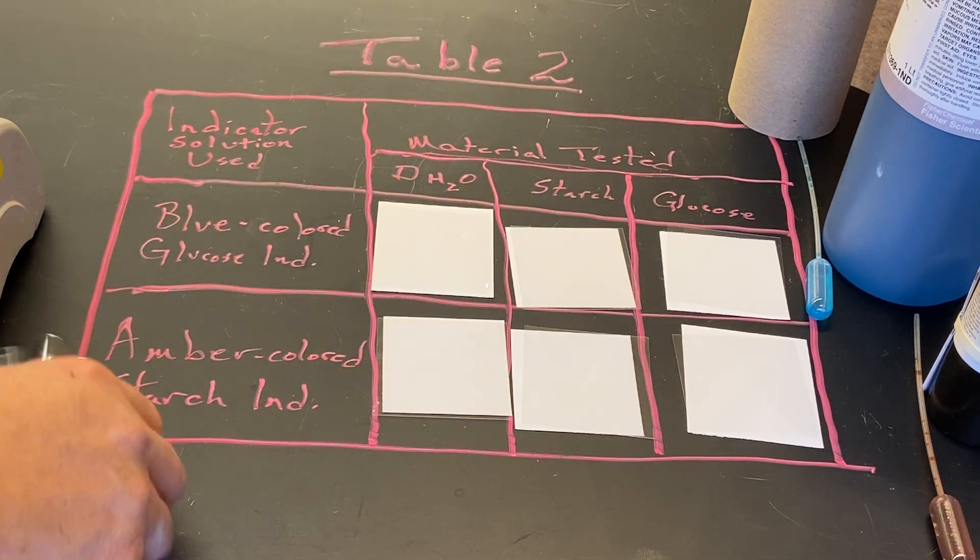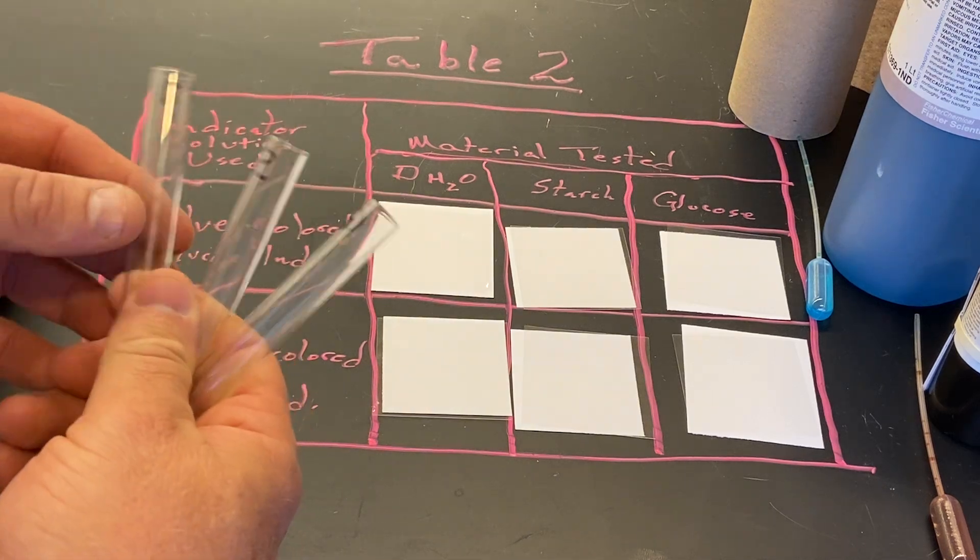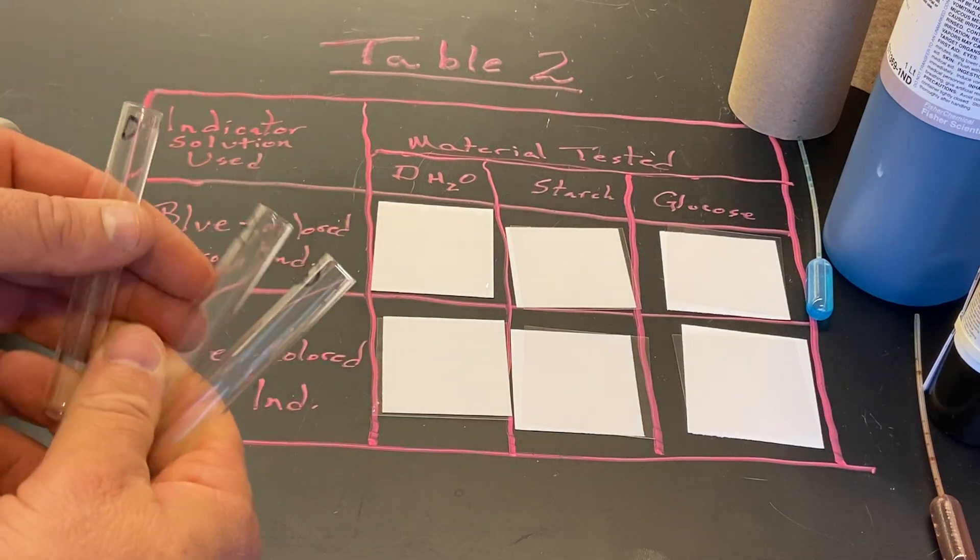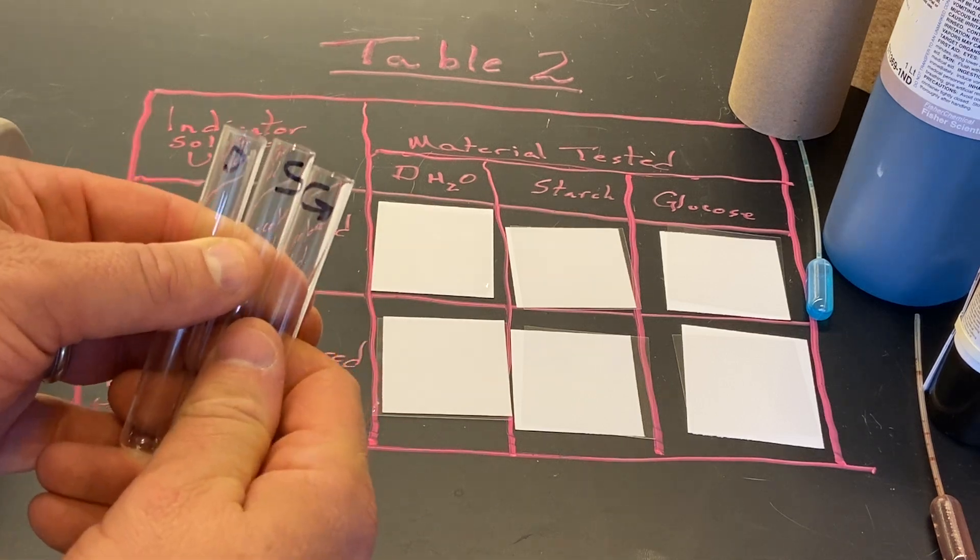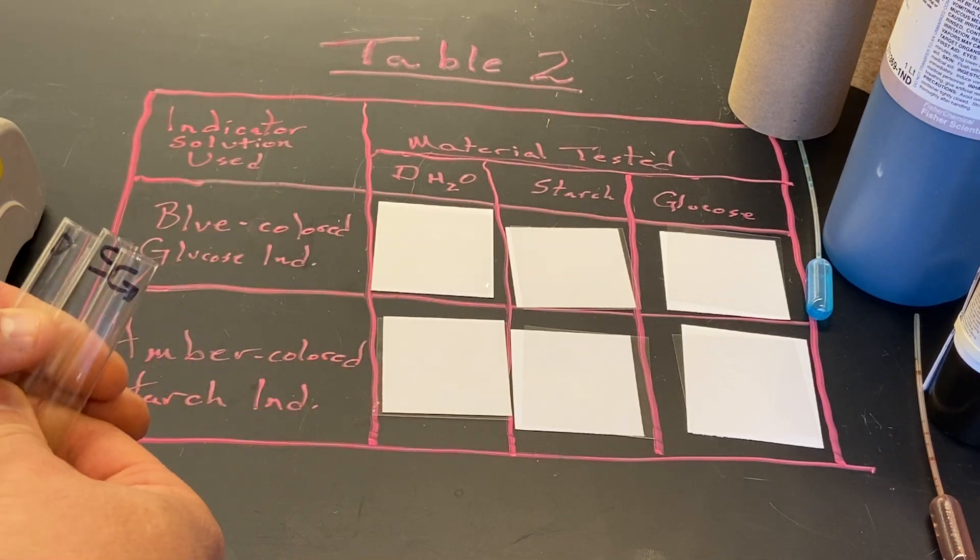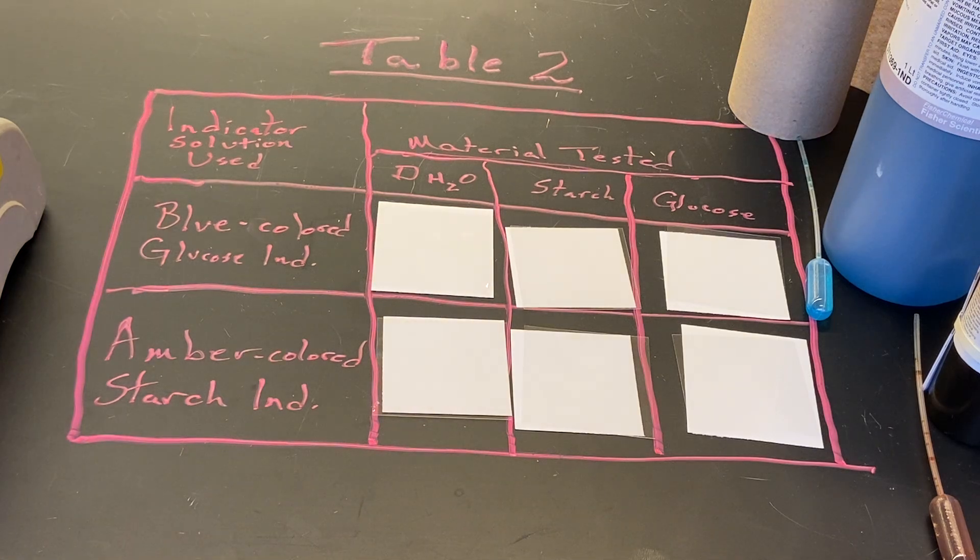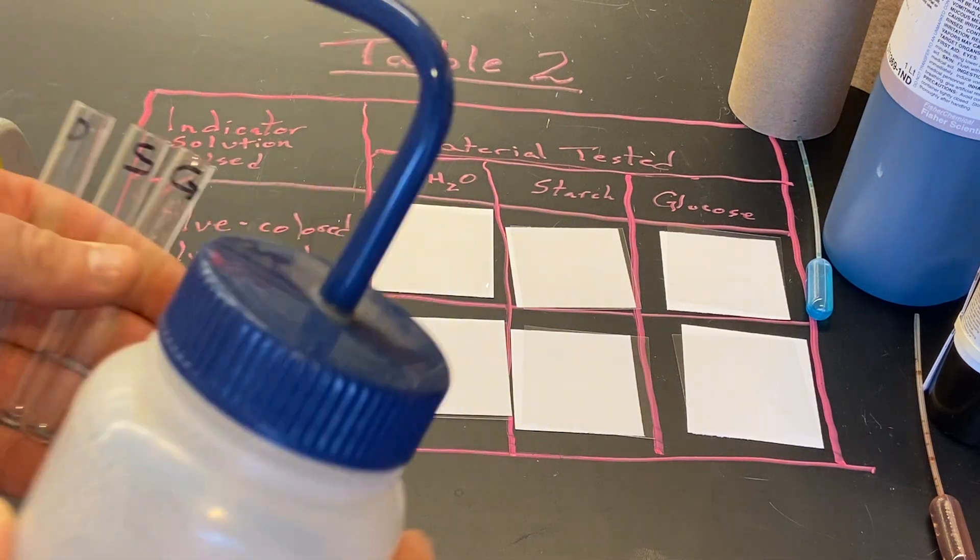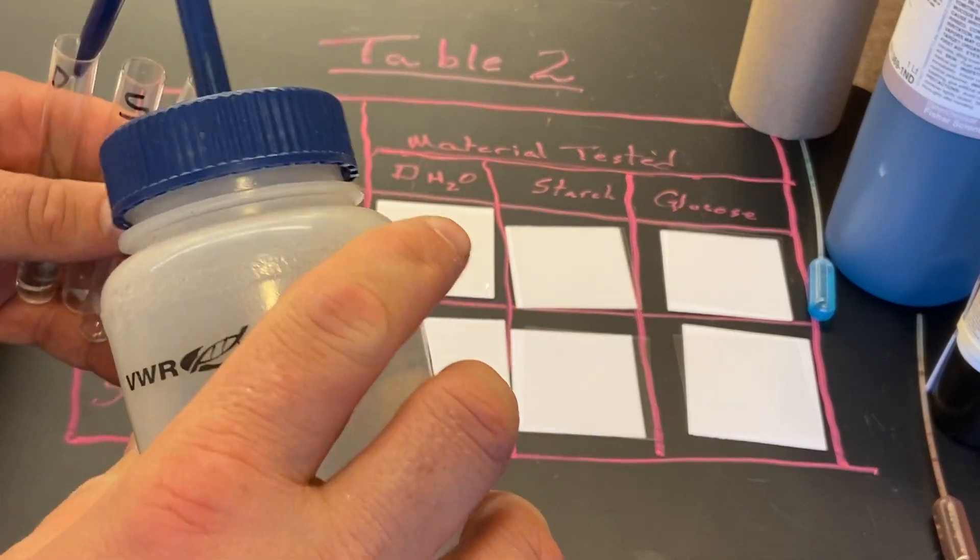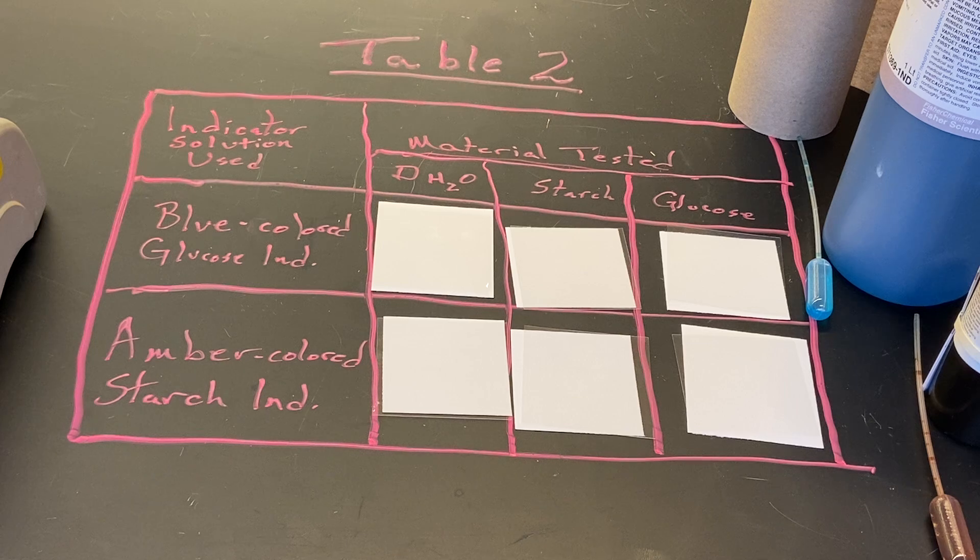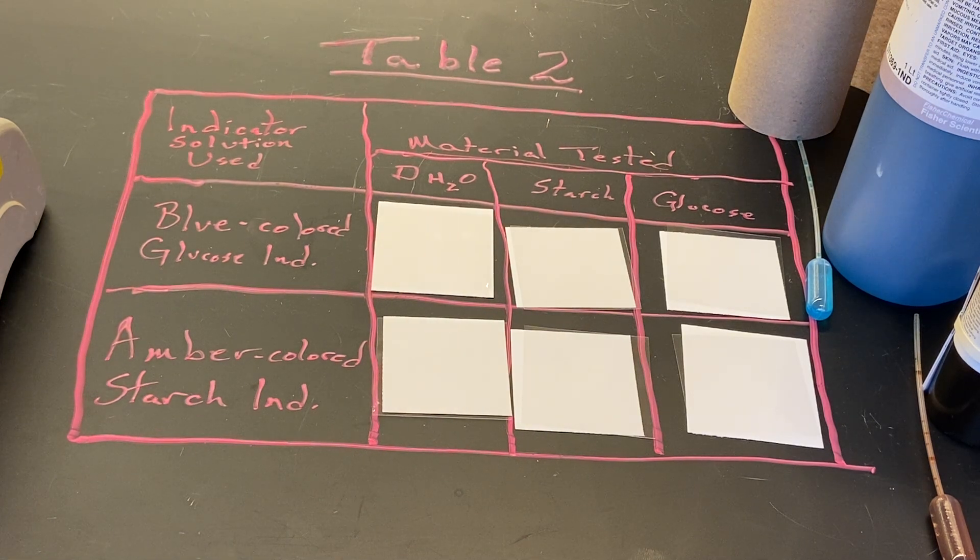I have three test tubes: one marked D for distilled water, one marked S for starch, and one marked G for glucose. We'll add distilled water first, just a little bit in there. Then we'll get the starch from the beaker over here and put it into the other tube.